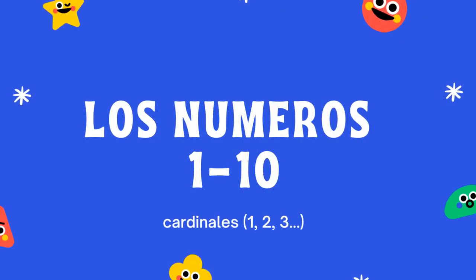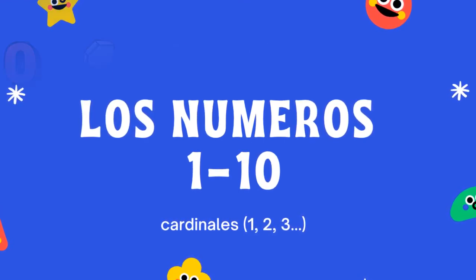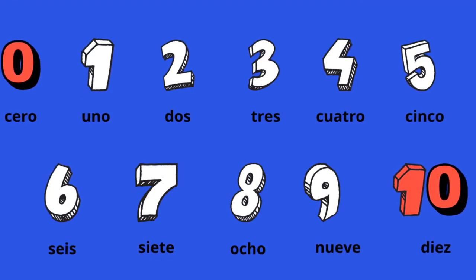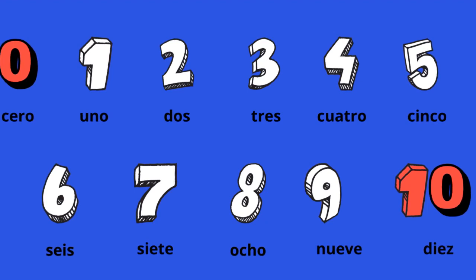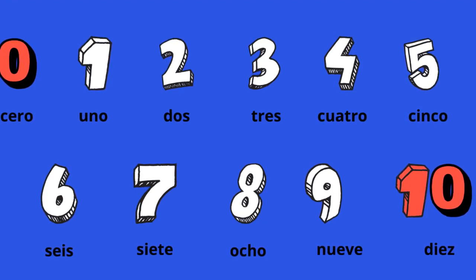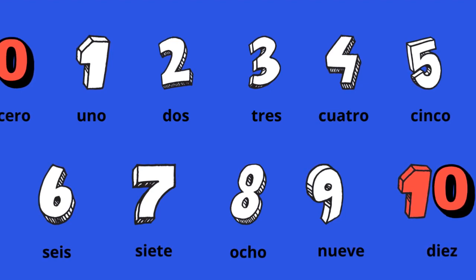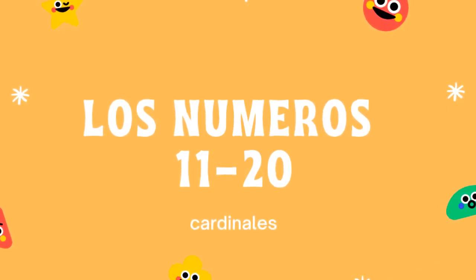So let's begin with los números uno al diez, cardinales. Repeat after me. Cero, uno, dos, tres, cuatro, cinco, seis, siete, ocho, nueve, diez.